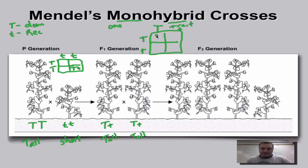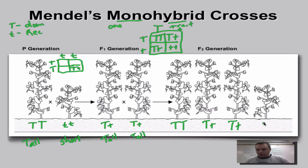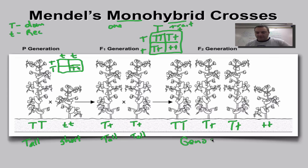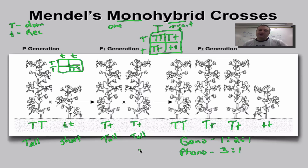Drawing the Punnett square for the P1 cross: every box gives big T little t, so all F1s are hybrids — heterozygous — and show the dominant phenotype, so they're all tall. Letting the F1s mate, the Punnett square gives: TT, Tt, Tt, tt. The genotype ratio in the F2 is 1:2:1 — one homozygous dominant, two heterozygous, one homozygous recessive. The phenotype ratio is three tall to one short.